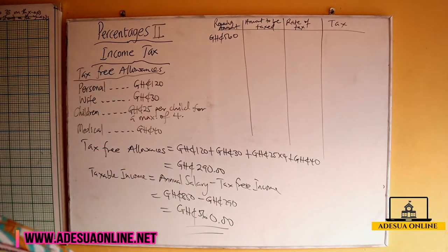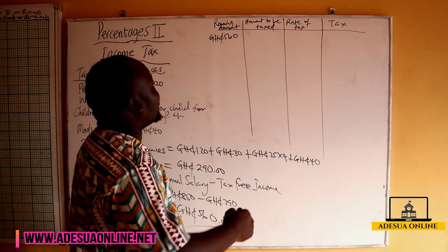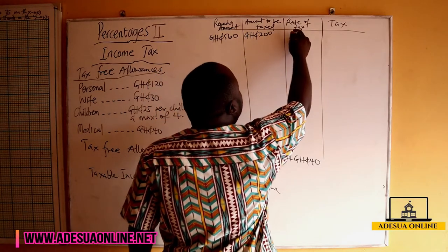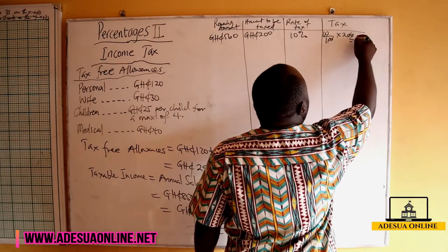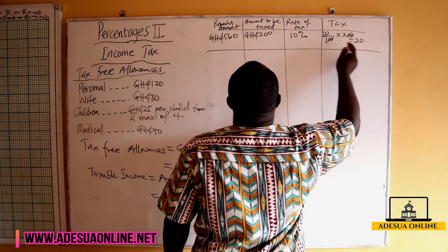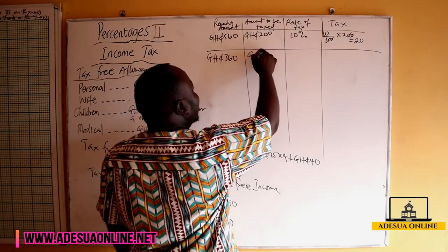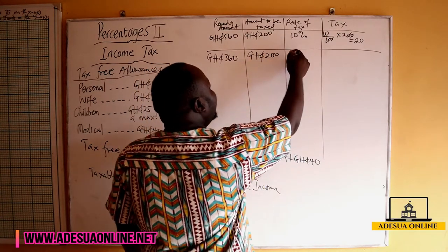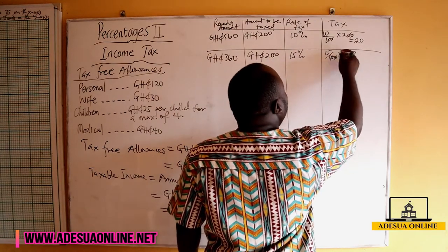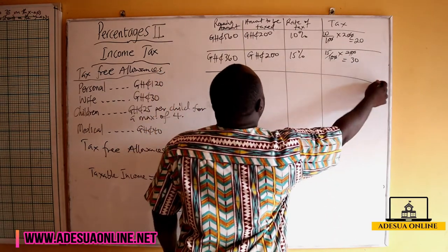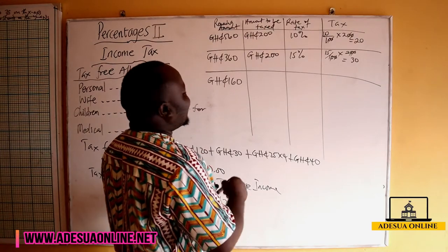For the first band: first 200 Ghana at 10%. The amount to be taxed is 200, the rate is 10%, so 10/100 × 200 = 20 Ghana tax. We subtract 200 from 560, leaving 360. For the next band: amount to be taxed is 200 at 15%, giving 15/100 × 200 = 30 Ghana. Subtracting 200 from 360 leaves 160. For the next band, the amount to be taxed is 200, but only 160 remains.